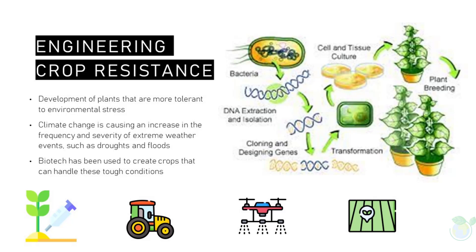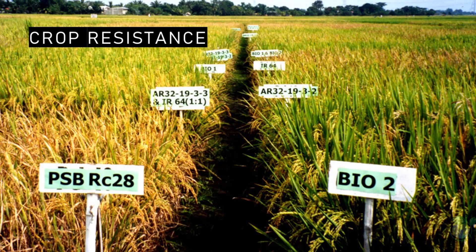Another important advance in plant biotechnology has been the development of plants that are more tolerant to environmental stress. Climate change is causing an increase in the frequency and severity of extreme weather events such as droughts and floods. Biotech has been used to create crops that can handle these tough conditions — for example, there is now a rice variety that can grow in flooded fields, which is super helpful for farmers in areas that flood frequently.